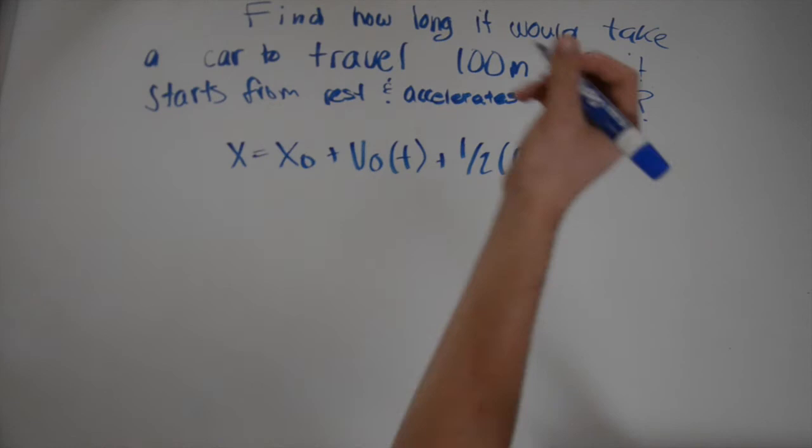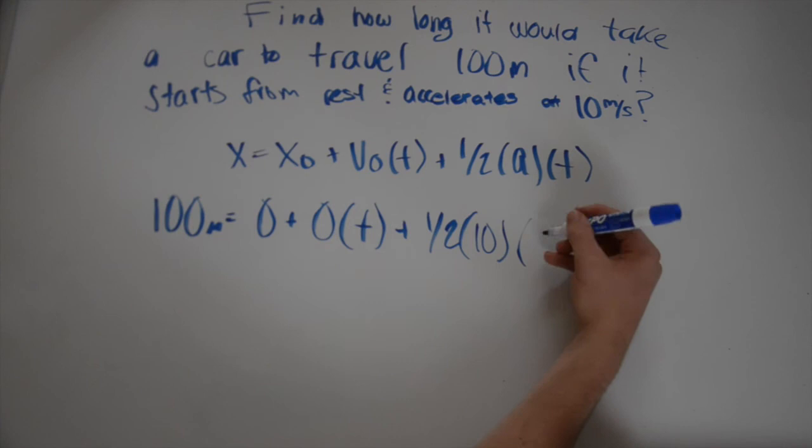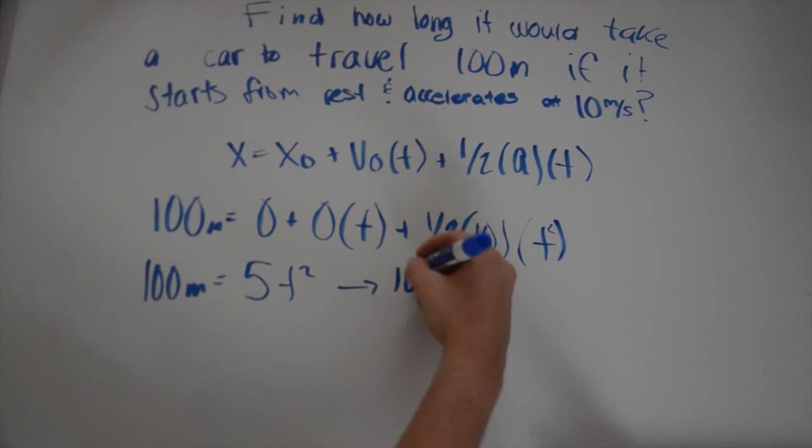Find how long it would take a car to travel 100 meters if it starts from rest and accelerates at 10 meters per second. We're going to use the distance formula. 100 meters equals 0 for the original distance, 0 for the original velocity, and 10 for the acceleration. So one-half of 10 is 5, so 100 meters equals 5T squared. Divide 100 by 5 you get 20, square root of 20 equals 4.47 seconds.